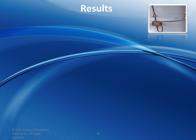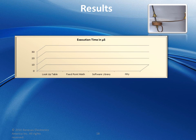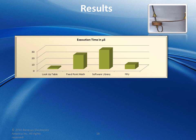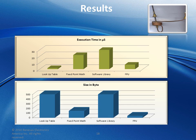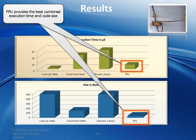Two charts summarize our findings of the four implementations. The first chart plots execution time: the lookup table presents the shortest execution time, and the floating point unit comes second. The second chart plots size in bytes. The lookup table is faster because all possible values have been previously memorized, resulting in the biggest memory occupancy. As a result, the floating point unit provides the best combined execution time and code size.